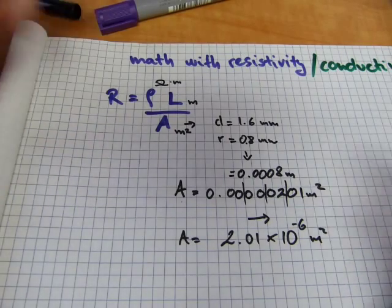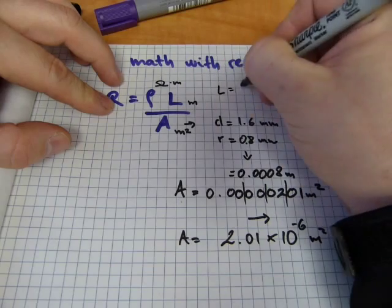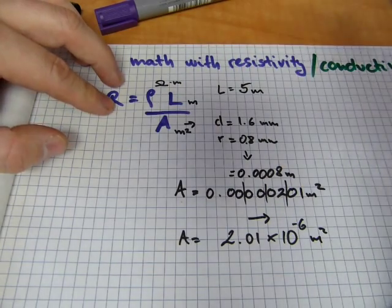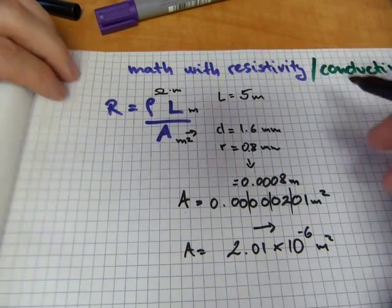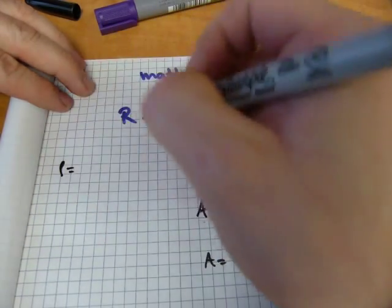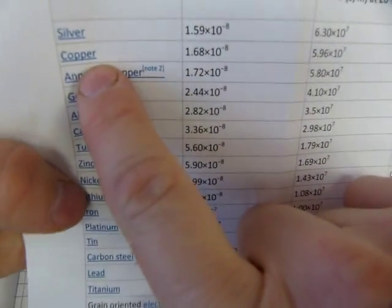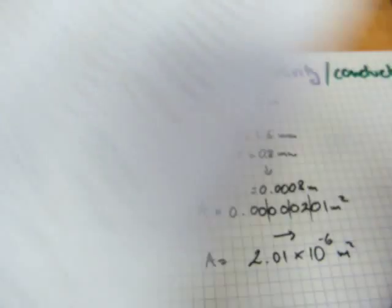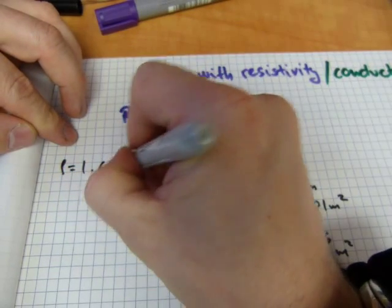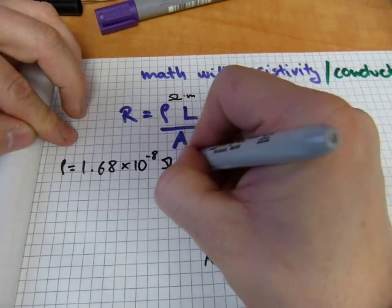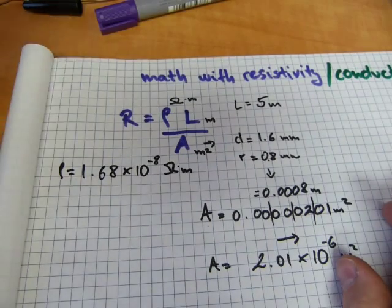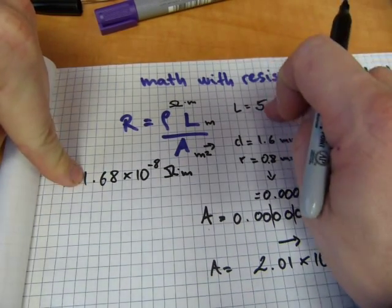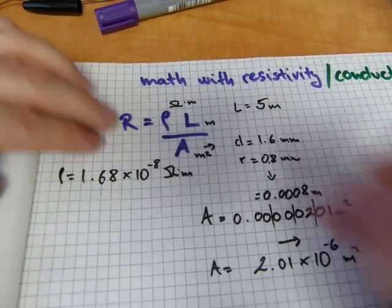And we have 5 meters of this one, so length is 5 meters. Length needs to be multiplied with resistivity. Resistivity for the copper is 1.68 times 10 to the minus 8 ohm meters. So this number needs to be multiplied with that one and divided by that one. That's what this formula says.